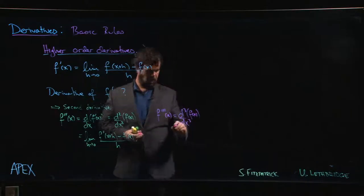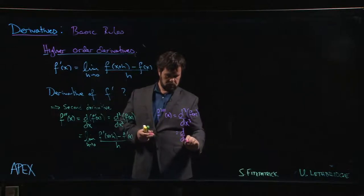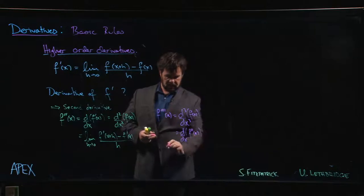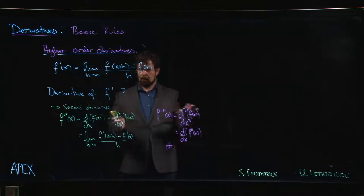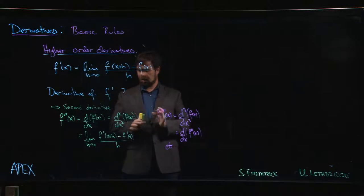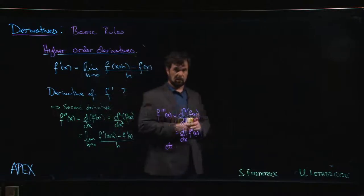And so that would be of course the derivative of the second derivative, and so on. Okay, we'll do one example for this so you get an idea of how things work, and then we're going to be ready to move on and talk about product and quotient rules.